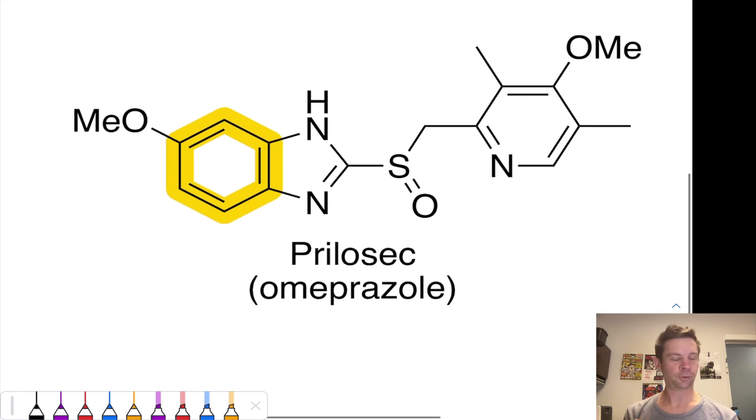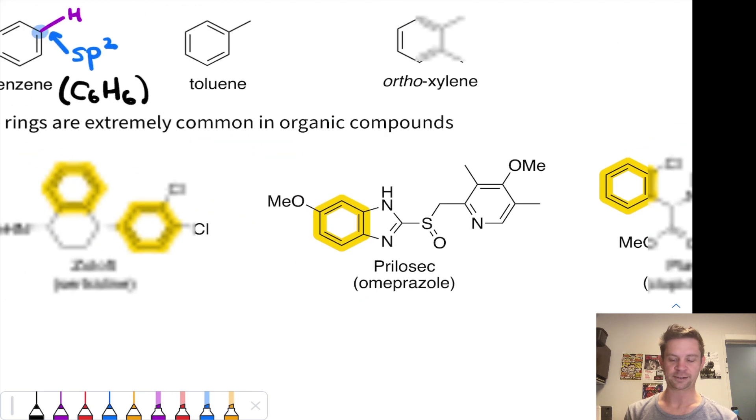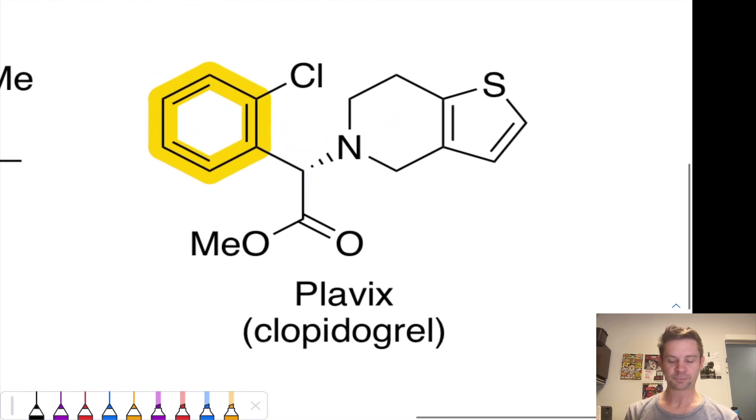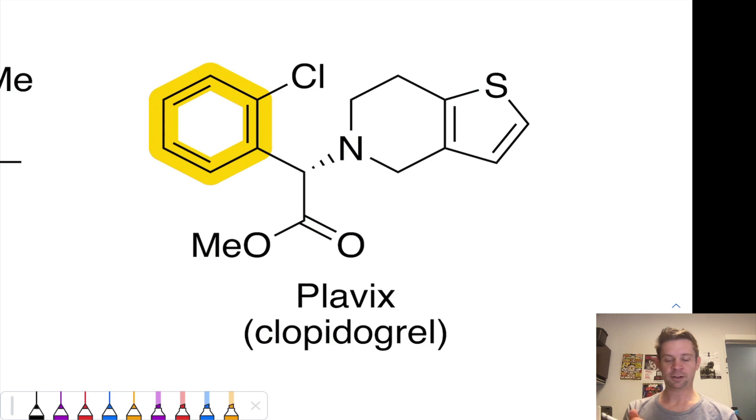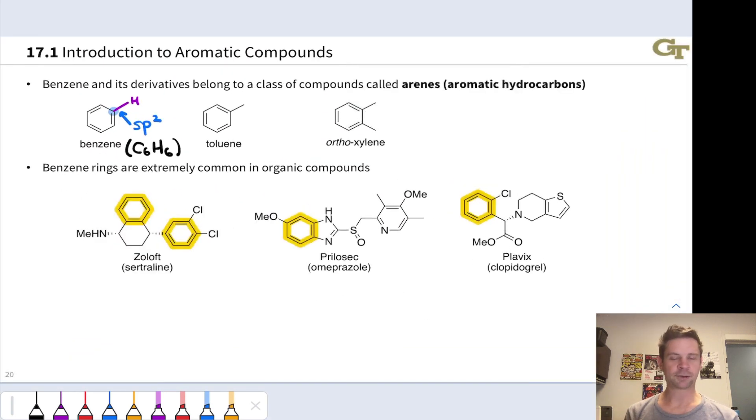Prilosec, or omeprazole, is a heartburn medication, a proton pump inhibitor. There's its benzene ring. This ring is actually fused to another ring, which is interesting. We'll talk about that as well. Plavix, clopidogrel, has an aromatic ring right here. So aromatic rings are ubiquitous, and they're very common in crude oil. The aromatic nucleus is so stable that we can get benzene out of crude oil, for instance. And so these come up a lot.